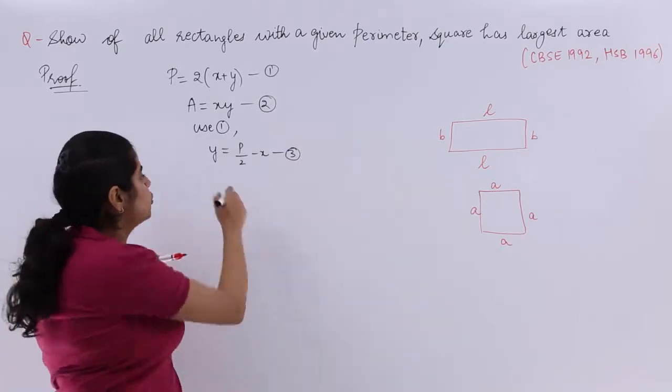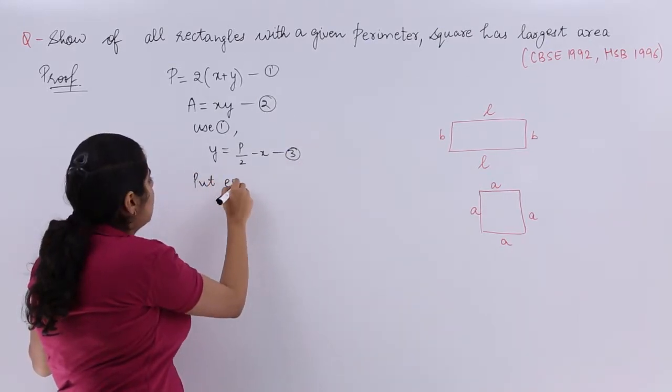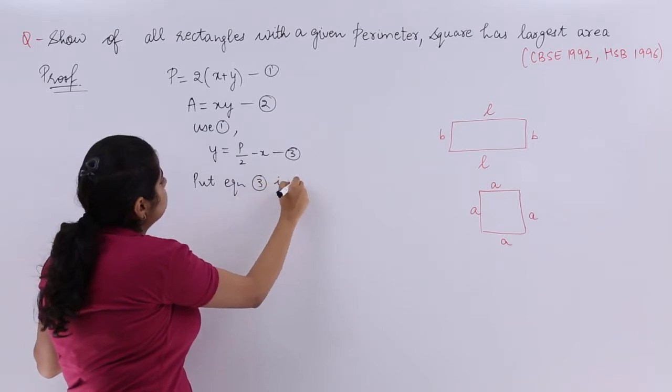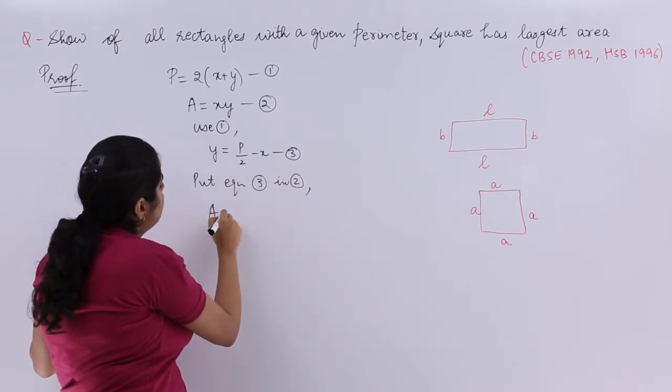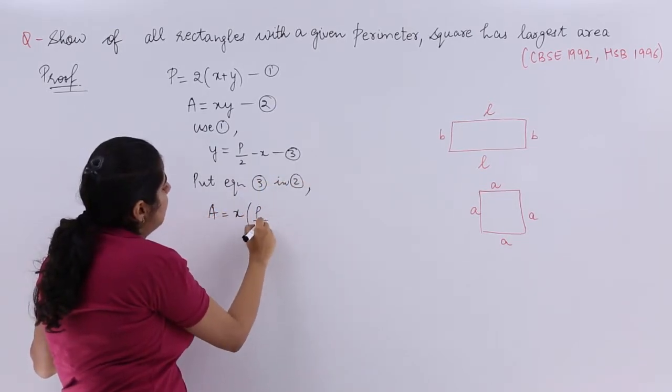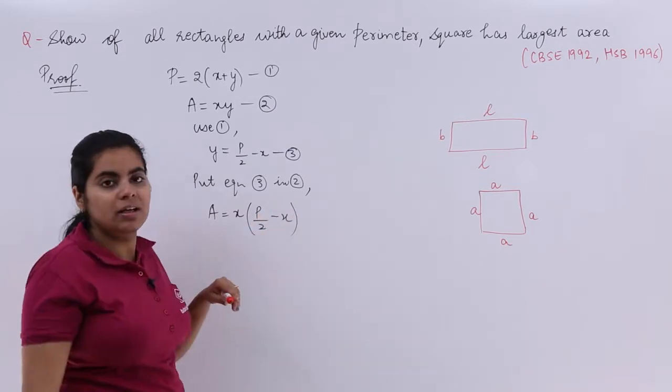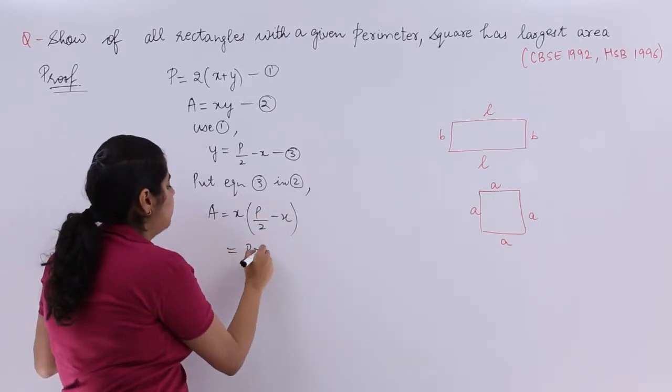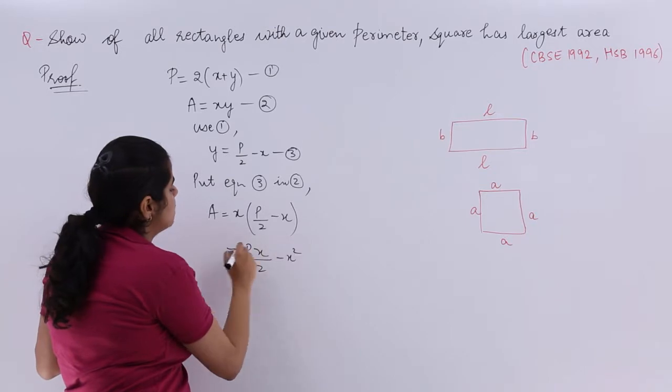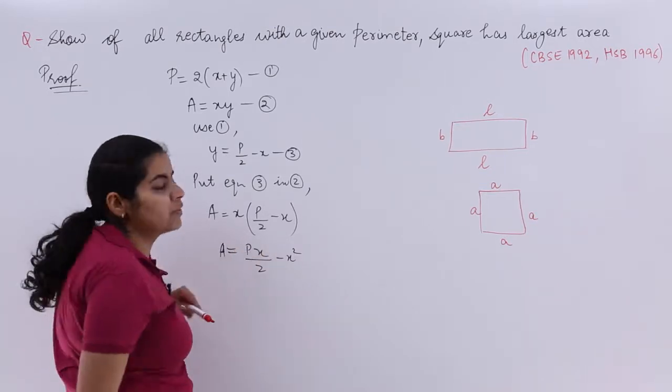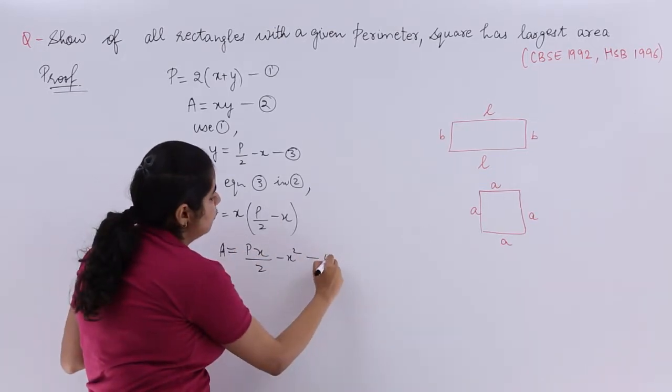When you have Y, let's put it in equation 2. Put equation number 3 into, I have area equals X multiplied by Y. Expanding, PX upon 2 minus X square equals A. Let's name this as equation number 4.